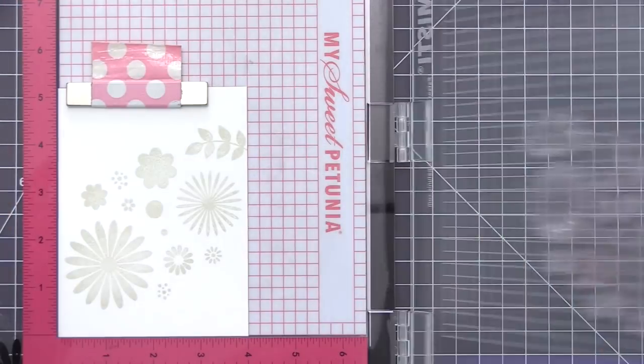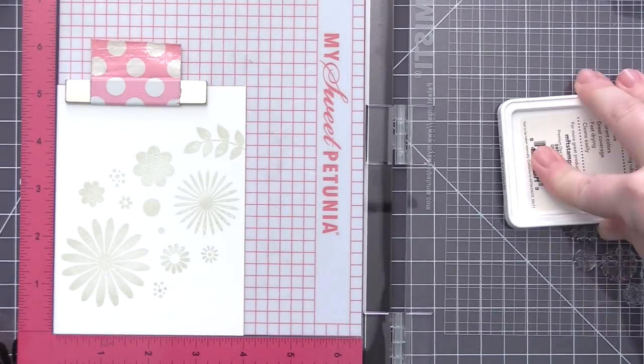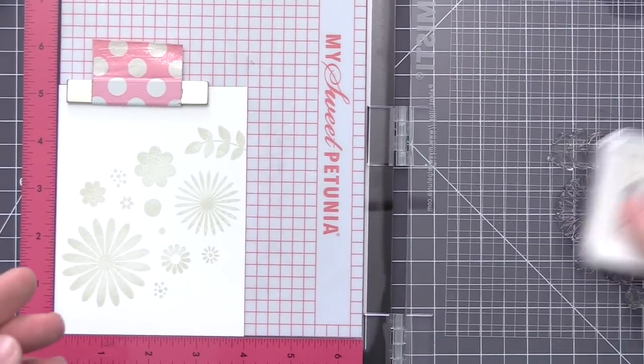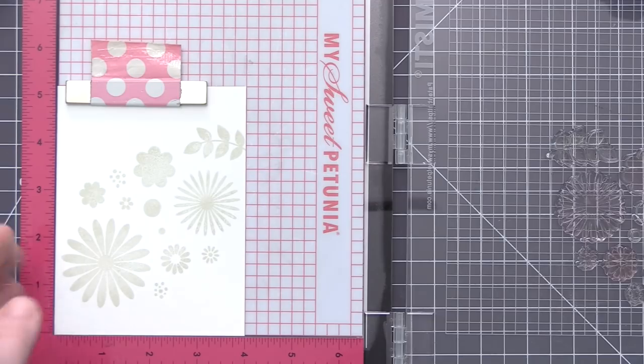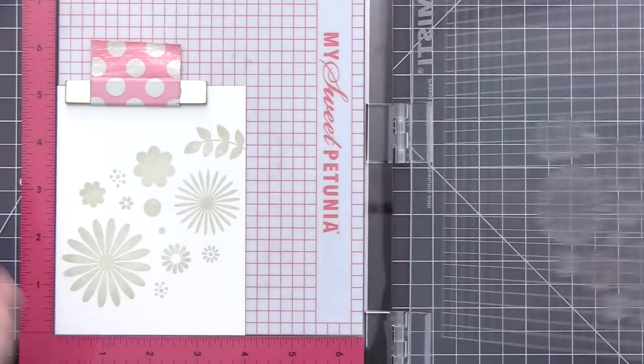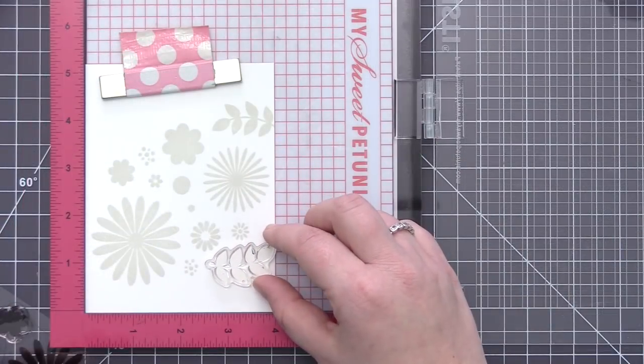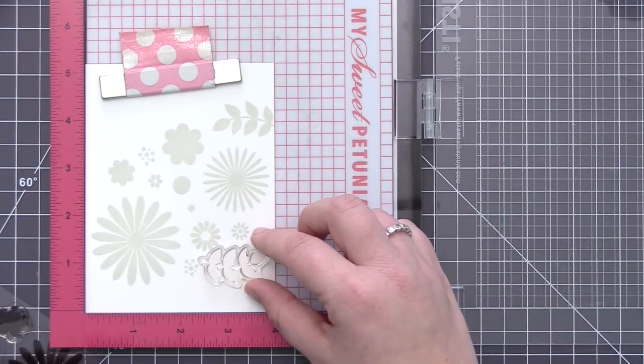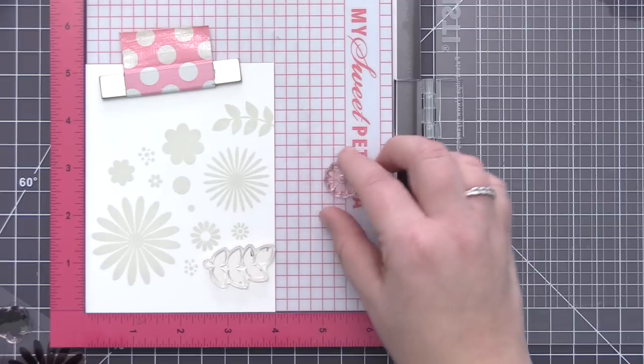I'm going to do sometimes double, sometimes even triple stamping just to get a really nice solid impression. And I find that with the Grout Gray ink, which is a lighter gray ink, the more you stamp it you can kind of darken it up a bit. So I didn't want it quite as light as it can be. I wanted it to go a little bit darker, but not so dark that it really took over the card.